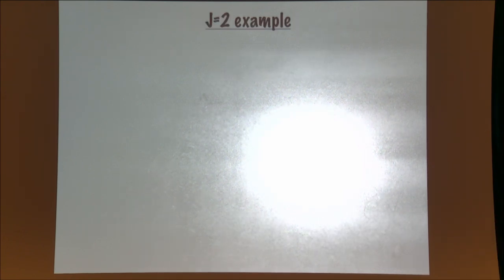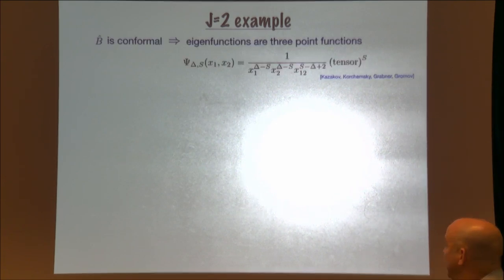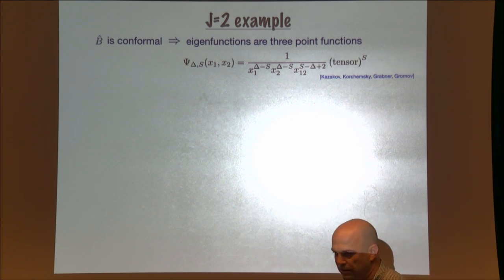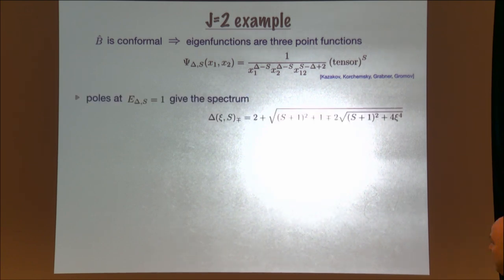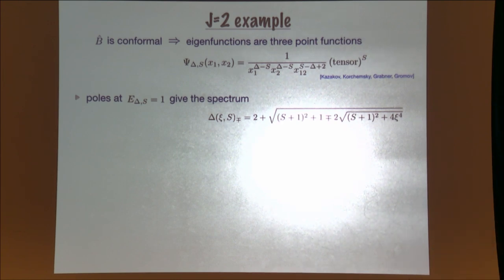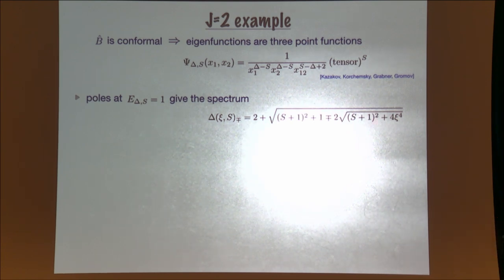Let's do an example. The simplest example is length two, J=2. In this case, just from symmetry, the wave function must be equal to the three-point function — it's determined by conformal symmetry times some tensor structure for the spin. One can plug it in and read the spectrum. We find two physical operators: one of twist two and one of twist four, with the dimension expressed as a function of the 't Hooft coupling at finite coupling.